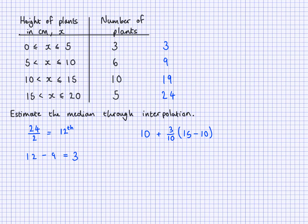That's going to be 10 add 3 tenths of 5. So 3 tenths times 5. That's going to be 10 add, well, 3 tenths of 5 would be 1.5. Okay? And 10 add 1.5 we know is 11.5. Okay? And remember, these values are in centimetres. So our estimated median is 11.5 in centimetres.